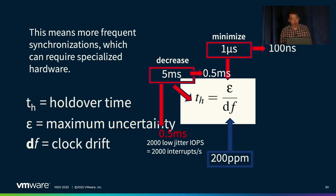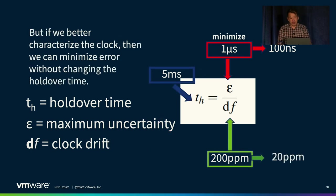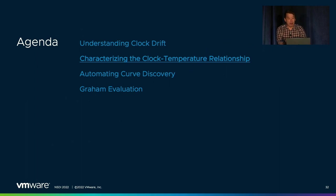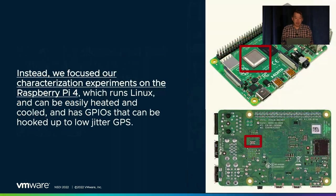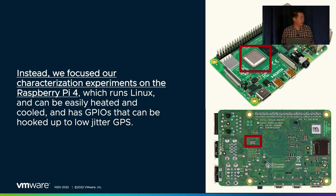However, if we characterize the clock instead, we could potentially achieve the same uncertainty without the same burden of synchronization — which is exactly what Graham is trying to achieve. We found that manipulating the temperature environment of a real server was a pain because of things like fans, so we focused our characterization experiments on the Raspberry Pi platform. We will apply our learnings back to commodity servers, but this platform allowed us to do things like point hair dryers at it and dunk it into ice buckets for rapid cooling and heating.